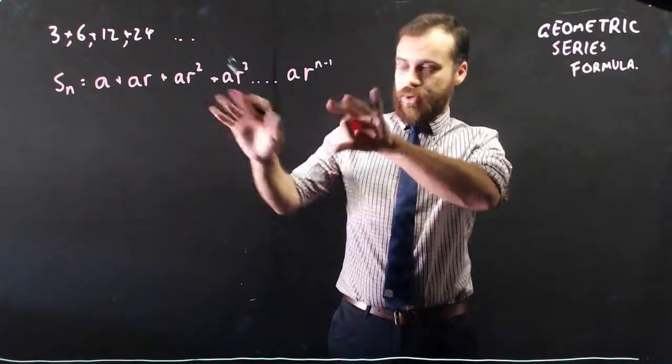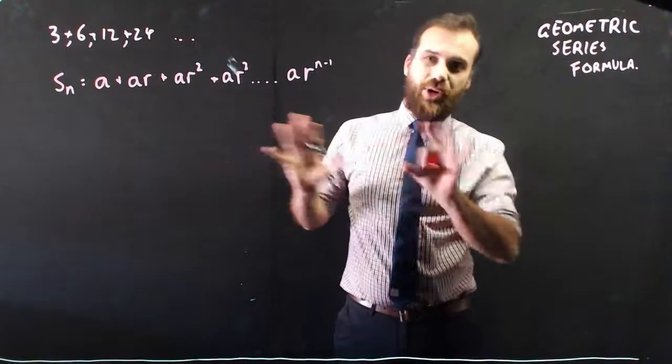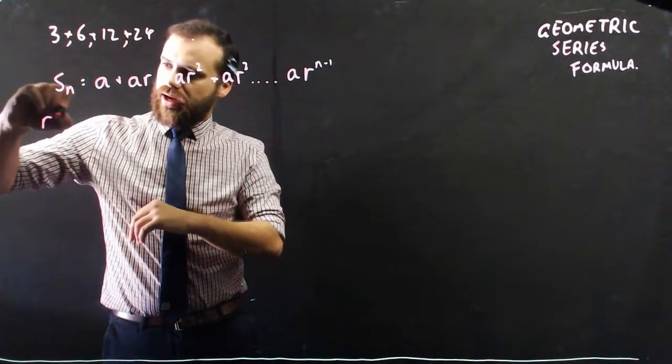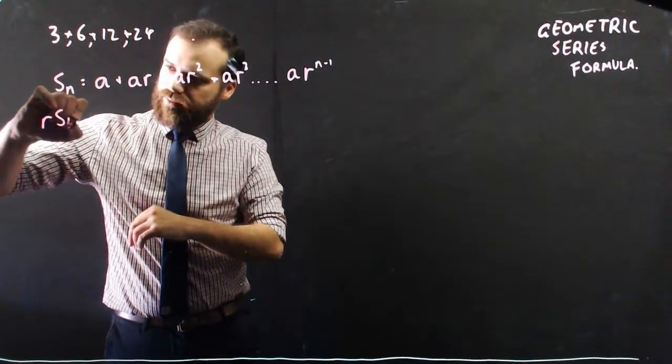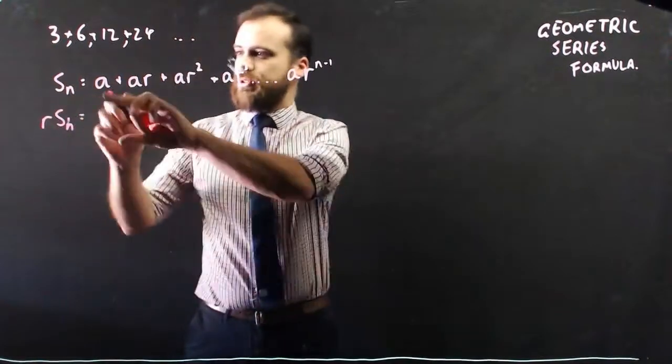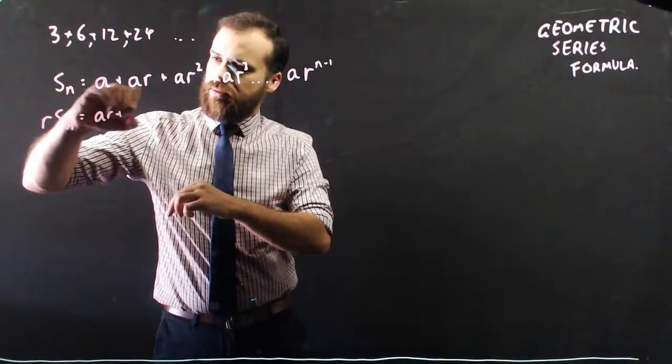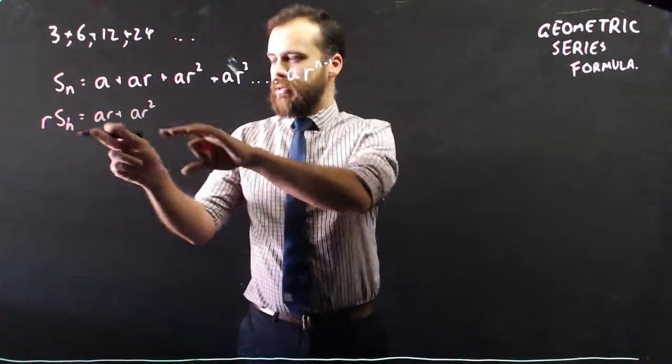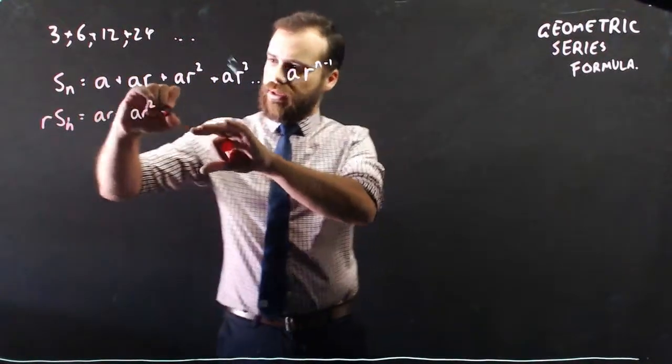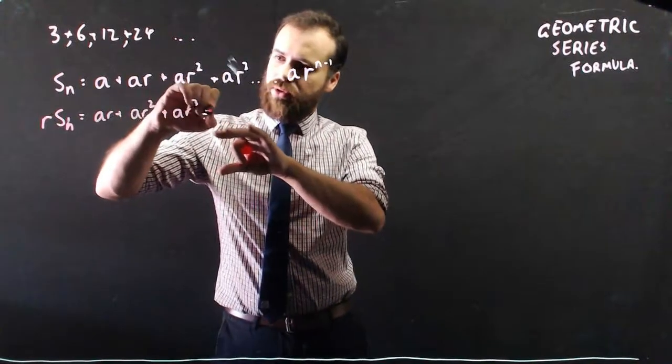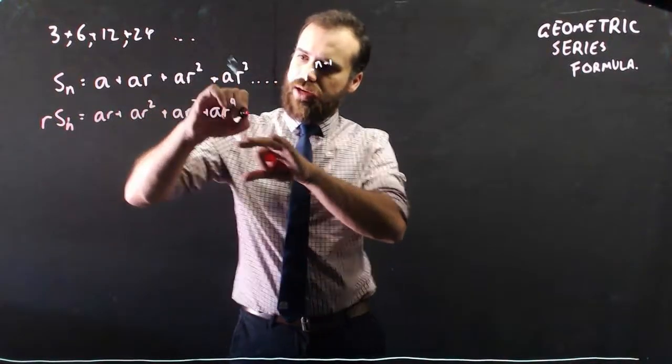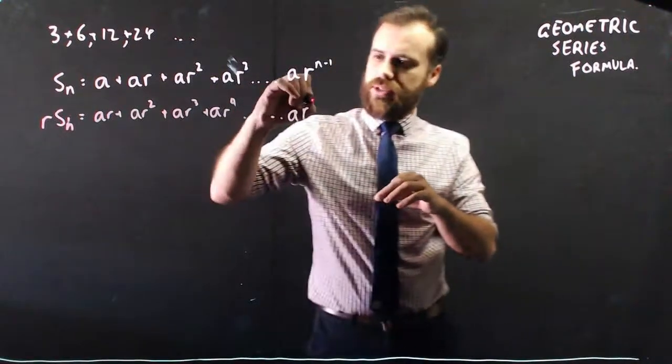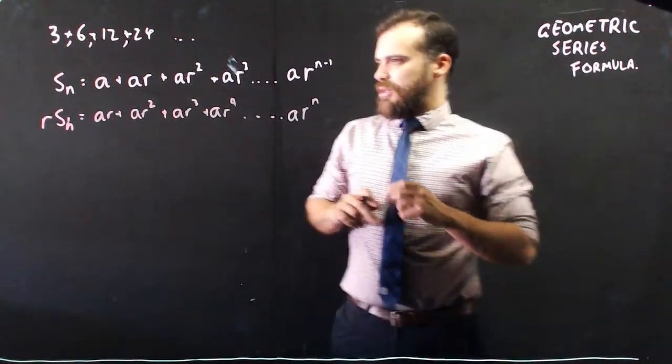Now, I'm going to take that equation and multiply both sides by r. So if I do that, I'm going to end up with r*S_n equals a times r plus a times r squared, because I'm multiplying everything by r. And that gives me one more there, and that gives me one more there, dot, dot, dot. And that gives me a*r not to the n minus 1, but to the power of n.